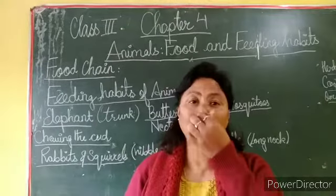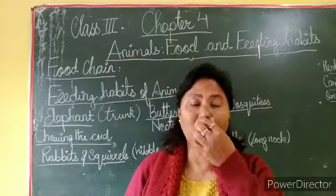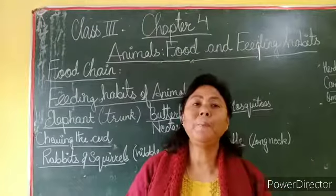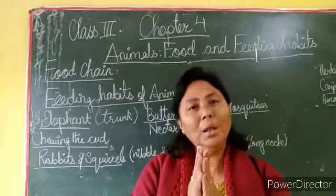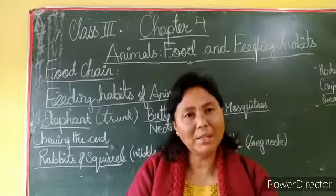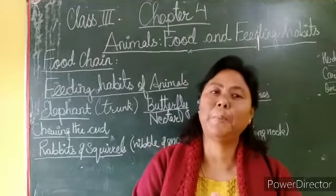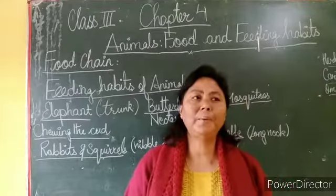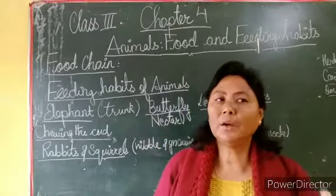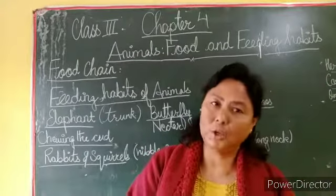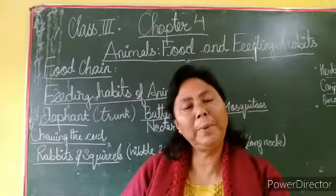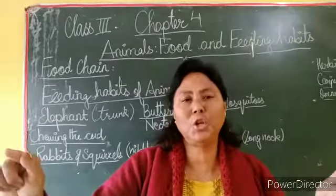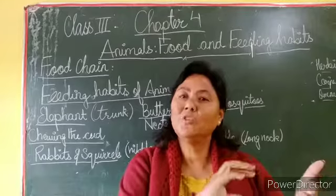Whether you eat directly or indirectly, it's the same. All of us are totally dependent upon plants. For example, grains are eaten by the chicken, and then human beings eat the chicken. So this is called a food chain.